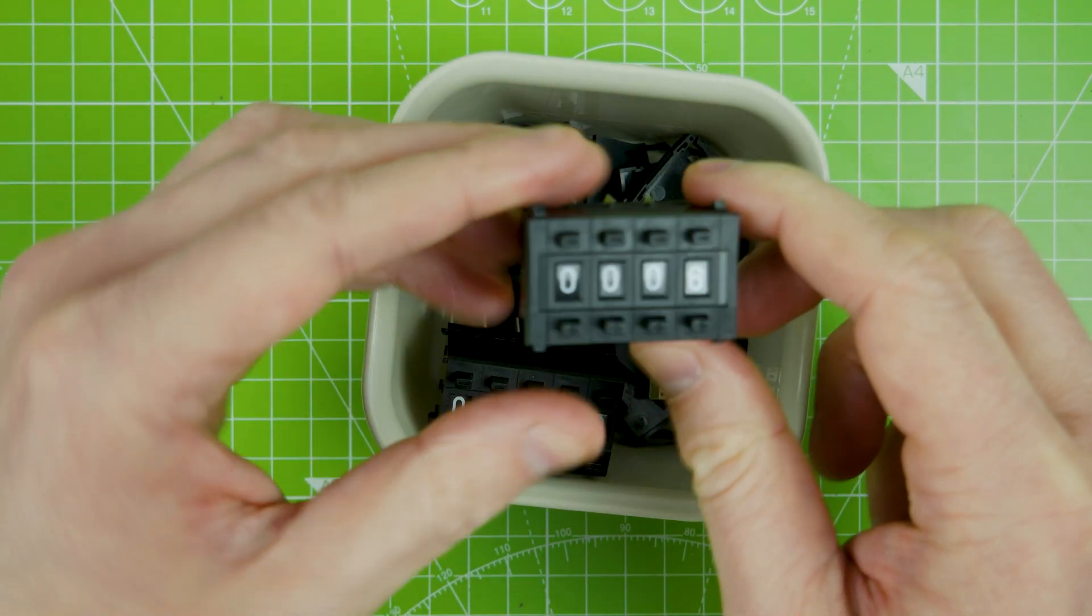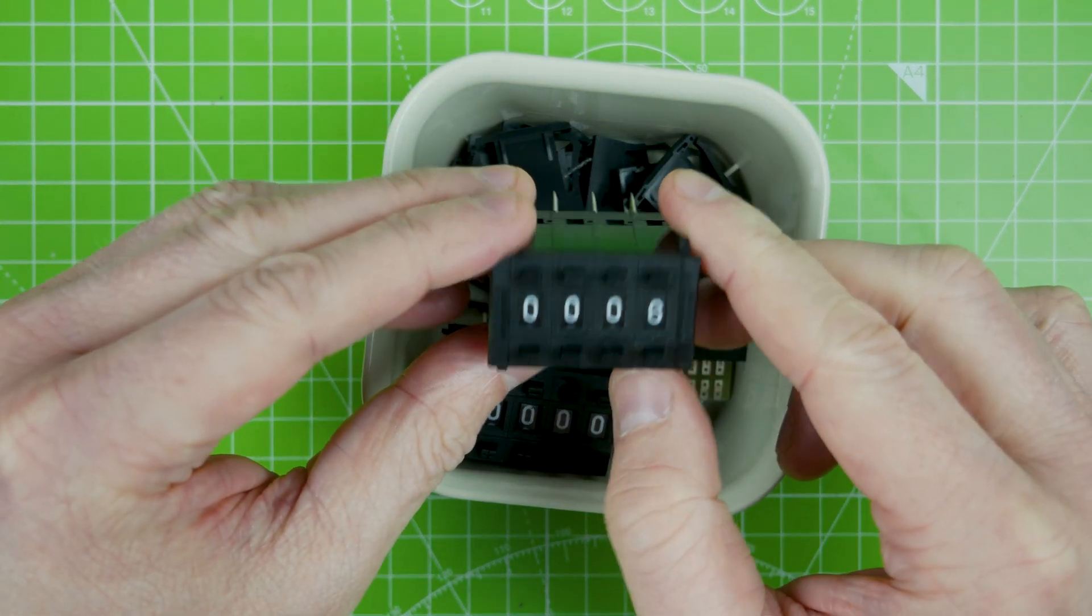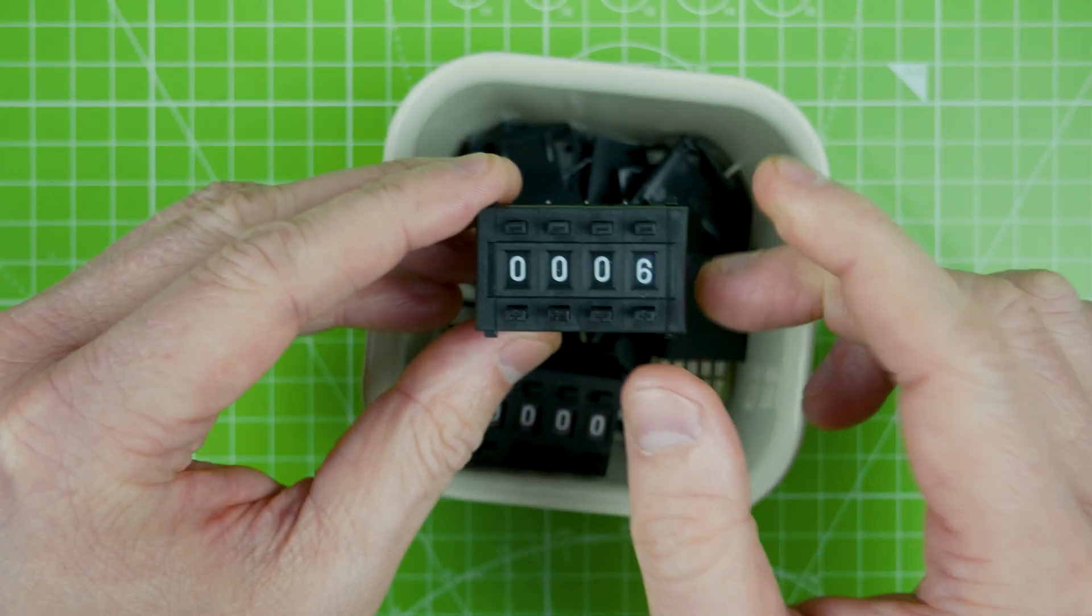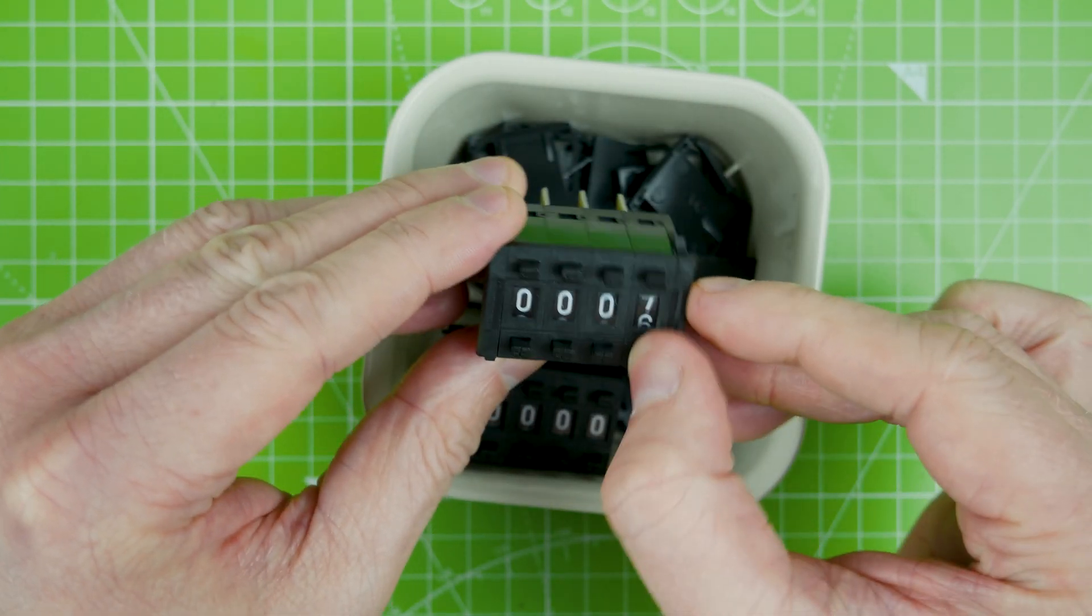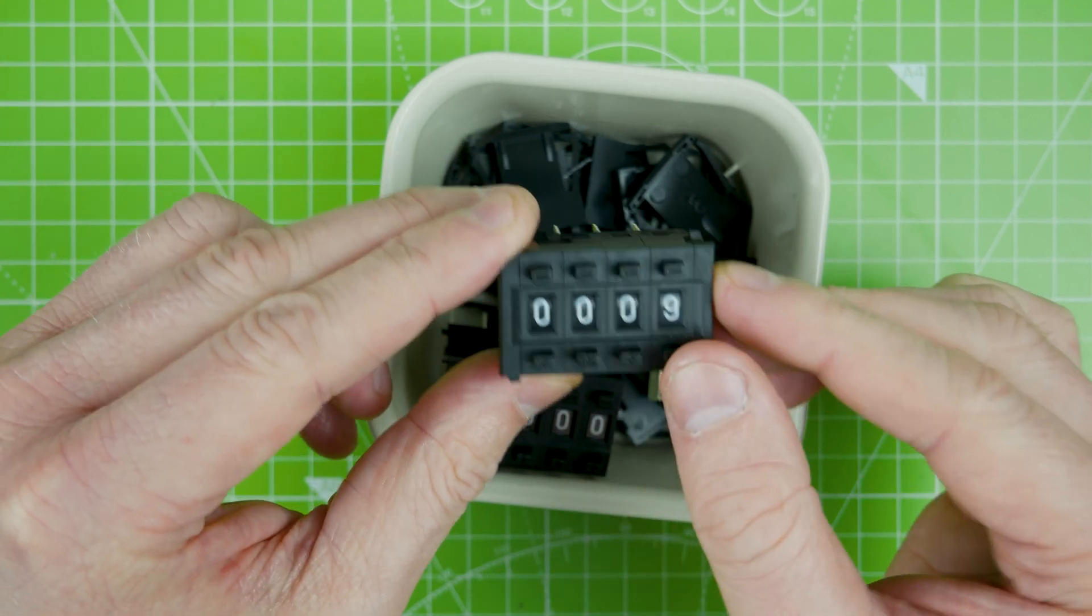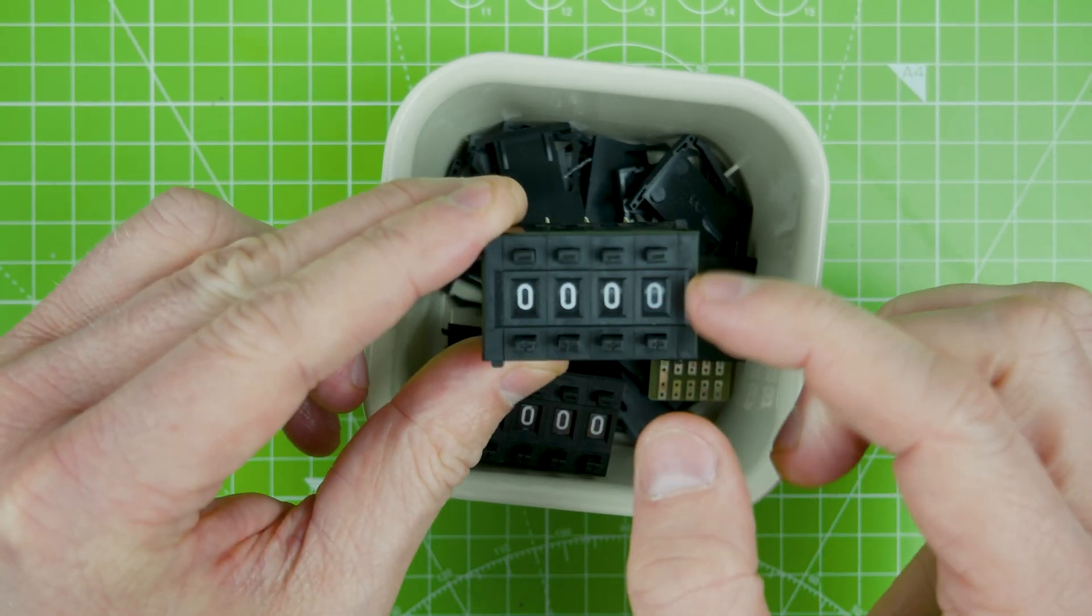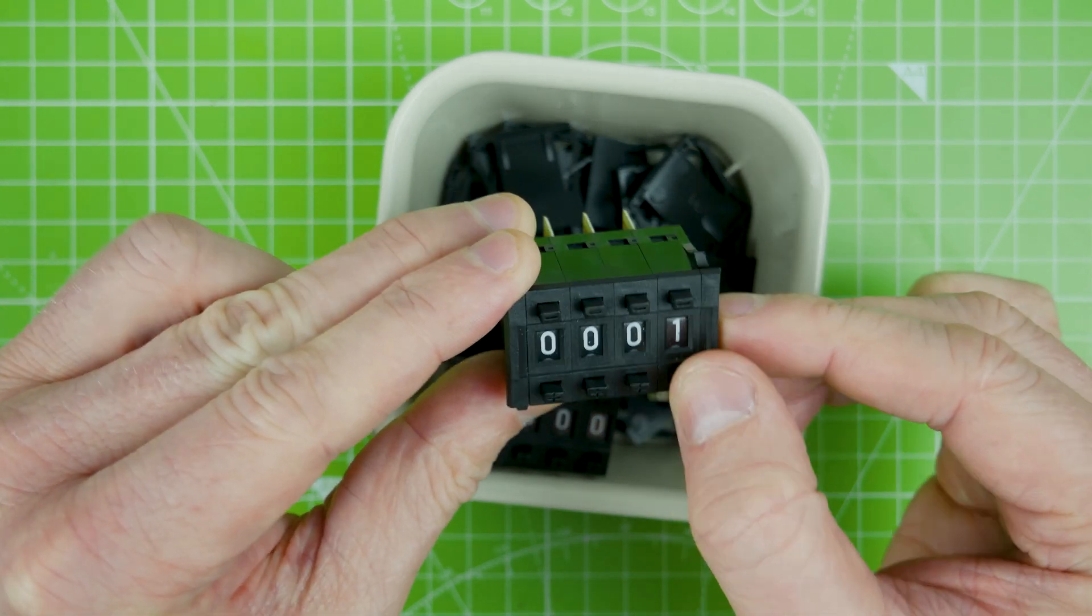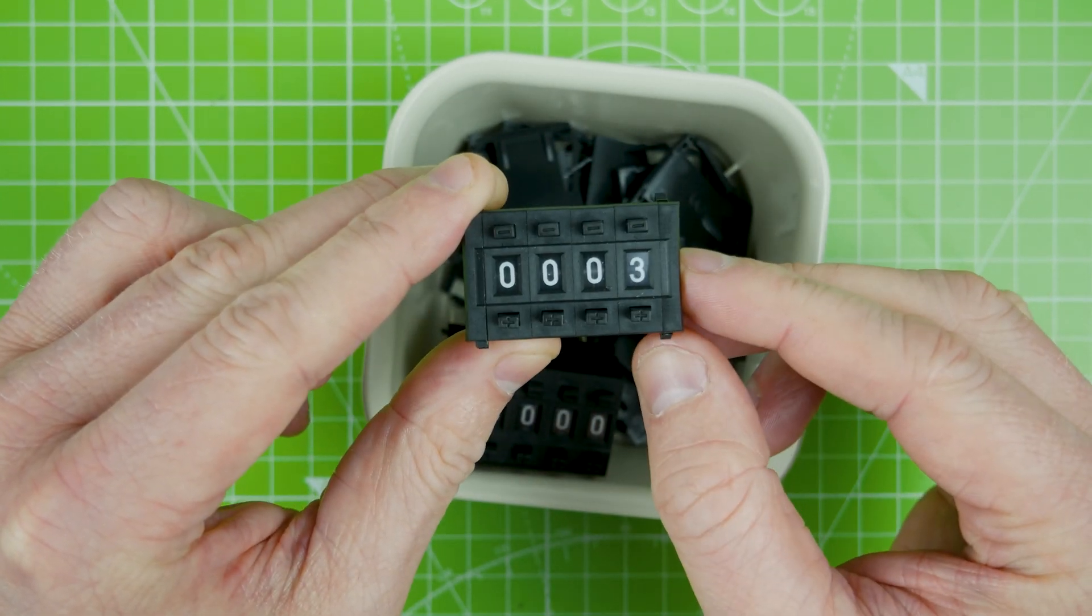So today you're going to be looking at these snazzy little thumbwheel or pushwheel switches. They have a binary coded decimal output and typically they have a count of zero to nine. Now we're going to have a little look at what these are, how they work, and also do a demo with a seven segment display.